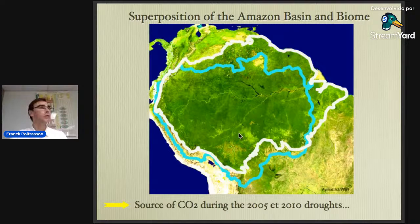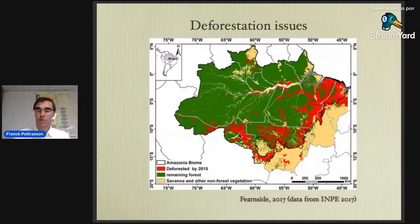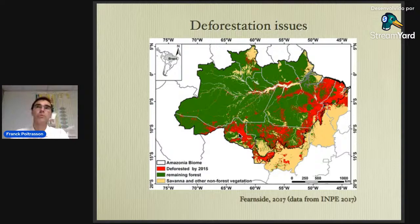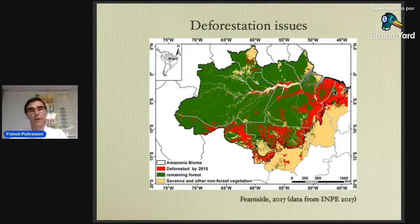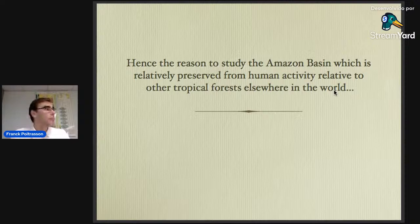To know whether that's true, we need to study it — and this is what I'm proposing here through a different approach. Another issue is deforestation. By 2015, about 17% of the forest had been transformed into pasture for cattle and mining activities. But compared to other tropical forests — for example, the Indonesian forest, which has been already destroyed by nearly 80% — the Amazon is still a very well-preserved tropical forest and a very good place to study natural processes.